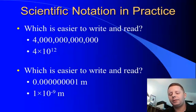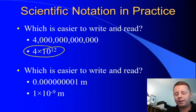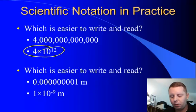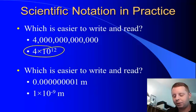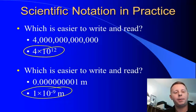So how do we do this? Well, which is easier to write and read? 4.0000000000000 or 4 times 10 to the twelfth? Now, the answer is obvious. Or, 0.00000001 meter for something much smaller than one can be much more simply written as 1 times 10 to the minus 9 meter.